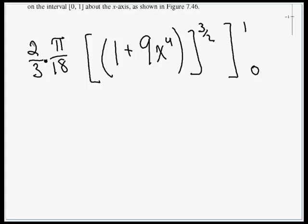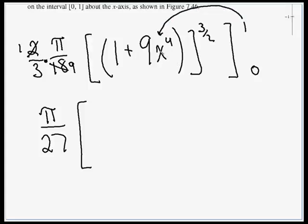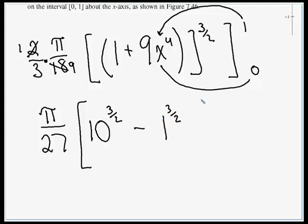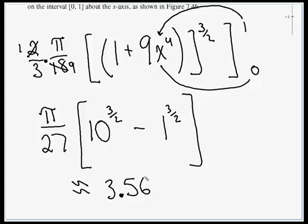2/3 times π/18 reduces to π/27. Plugging in the upper limit 1: 9(1)⁴ + 1 = 10, so we get 10 to the 3/2. Minus the lower limit: 1 + 9(0)⁴ = 1, so 1 to the 3/2. Punching that into the calculator gives approximately 3.56. This is a surface area, so the units would be squared units.